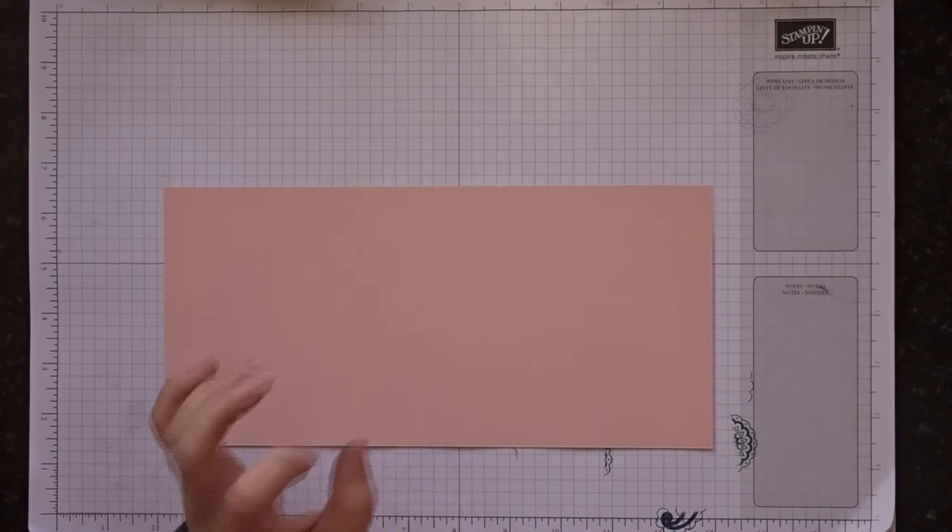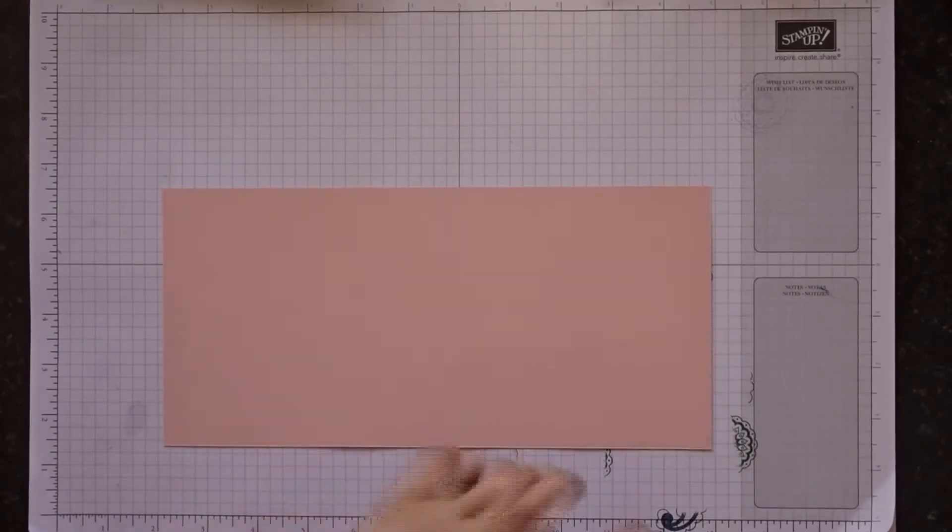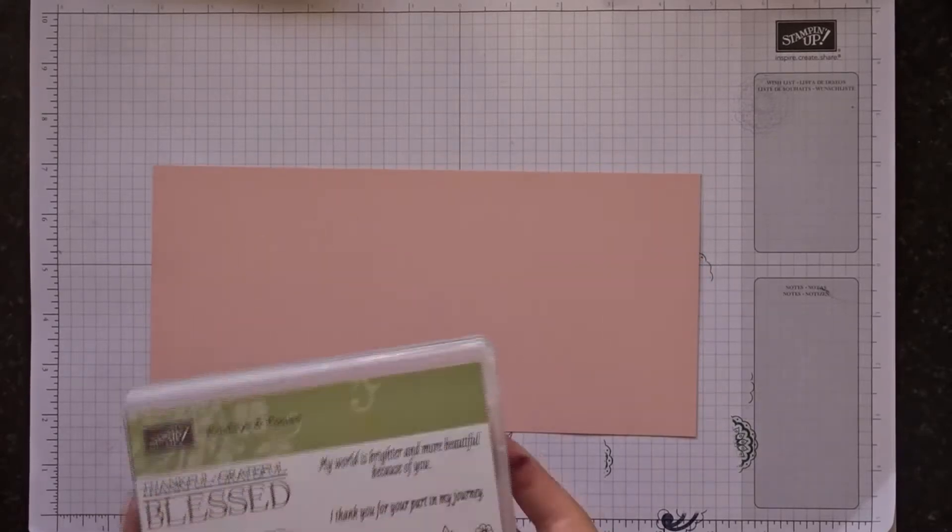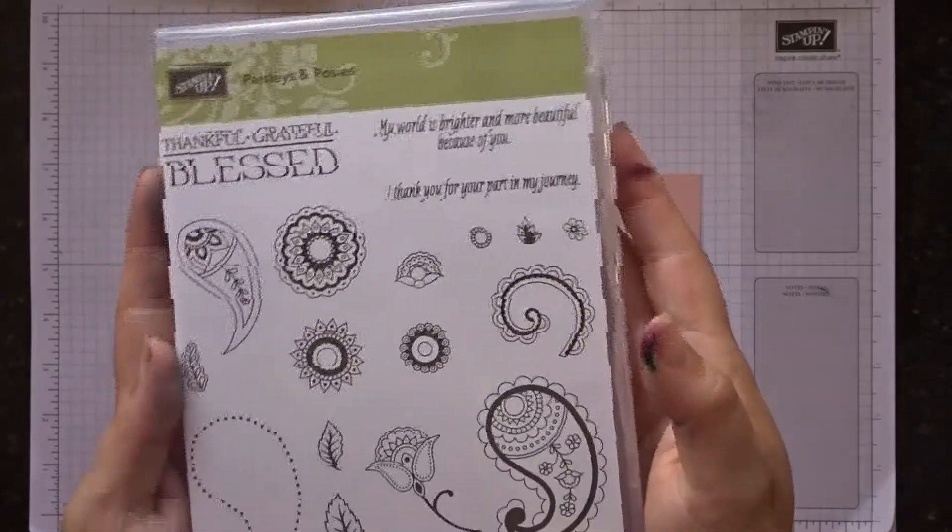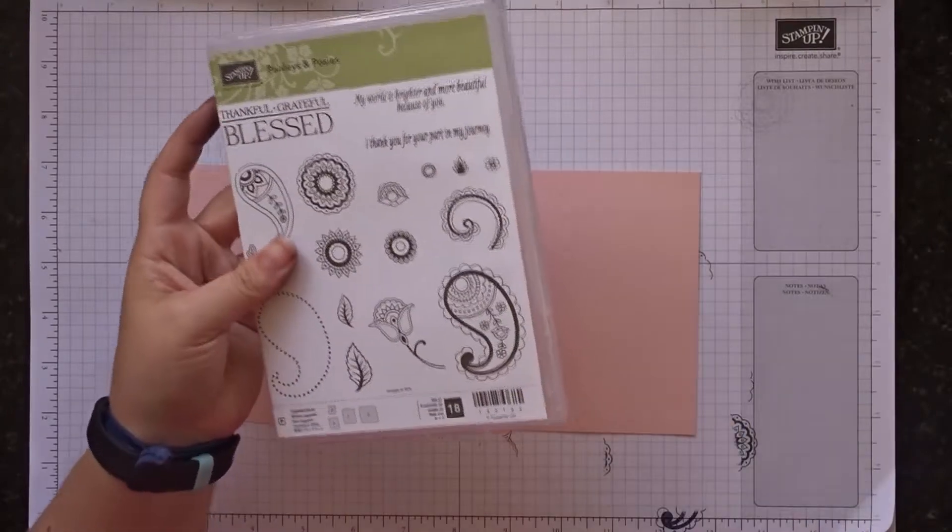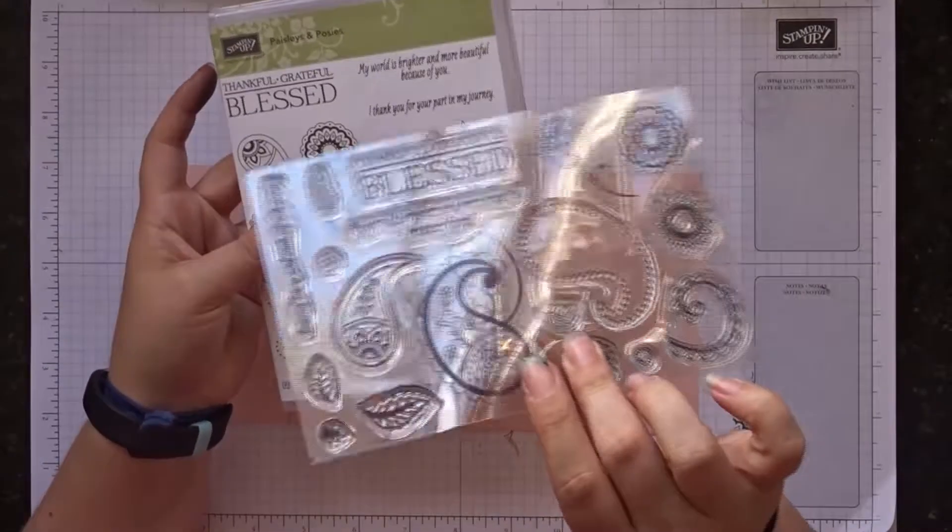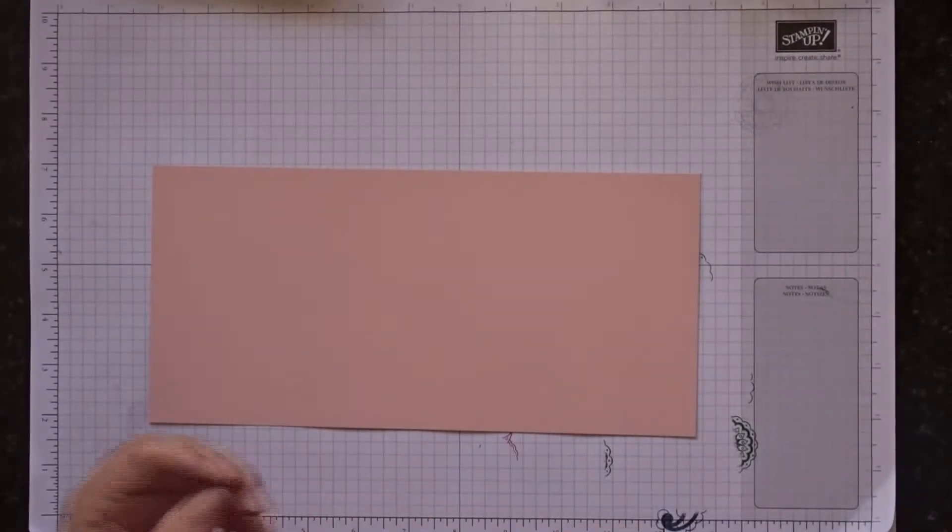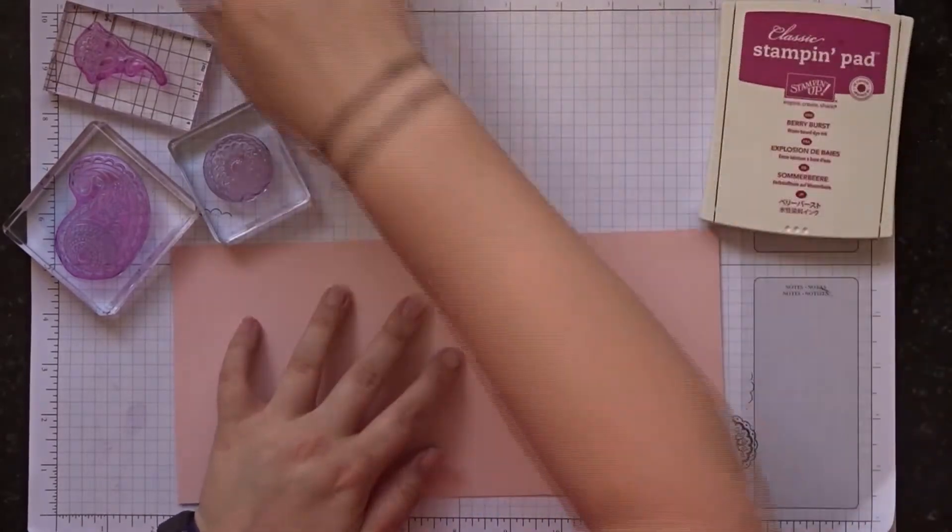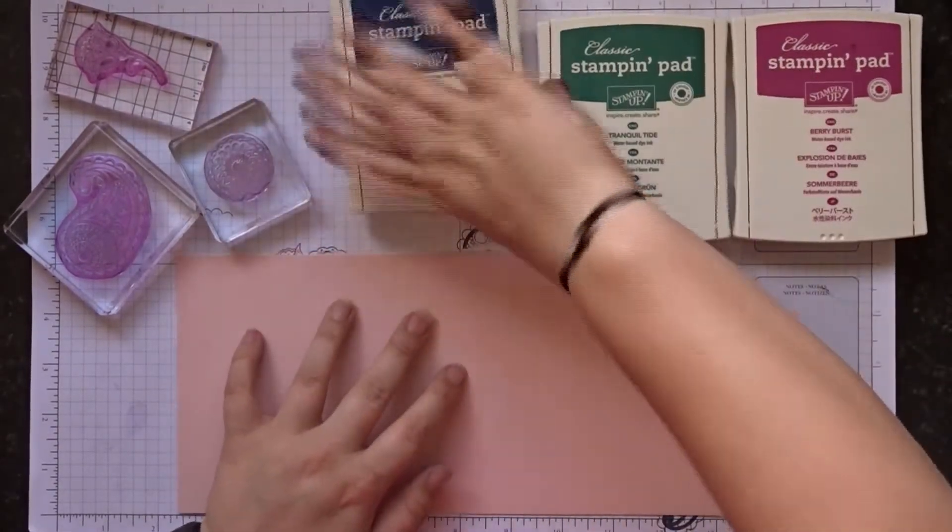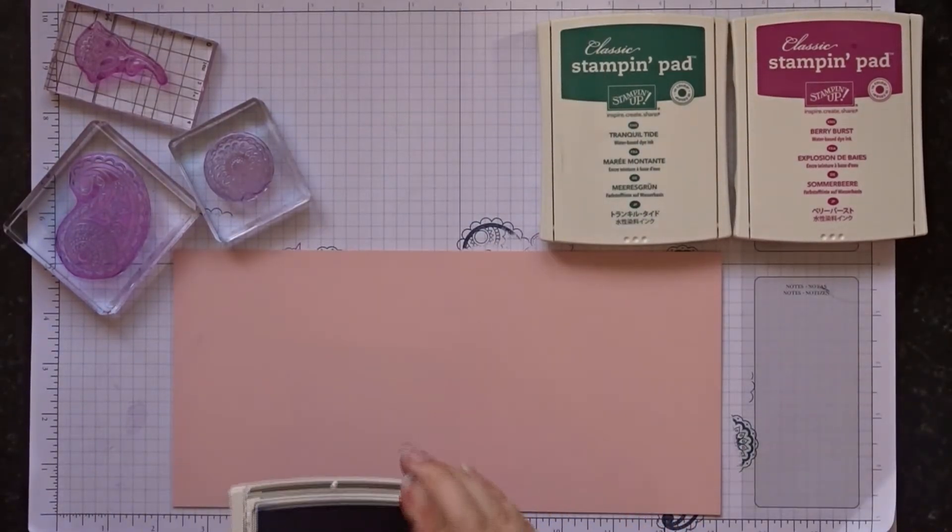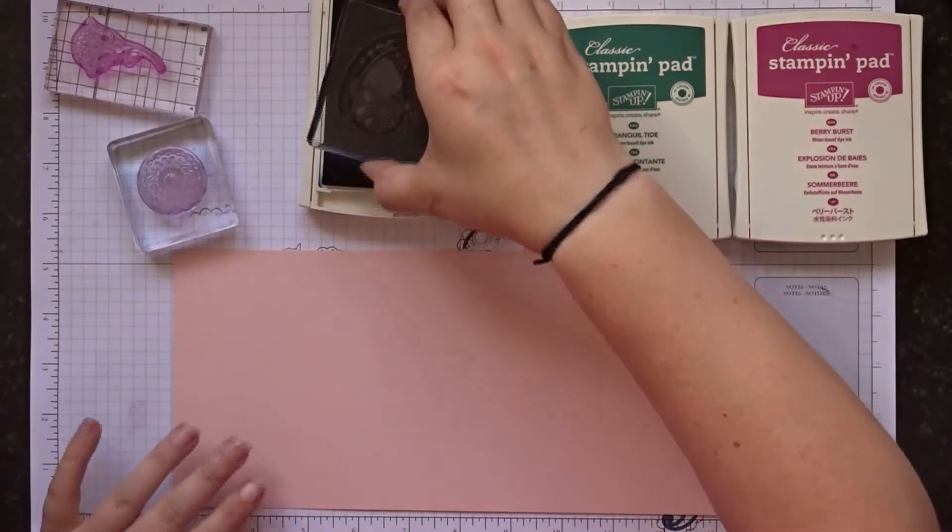So you're going to need a piece of cardstock that is ten and three quarter inches by five and one eighth inches. That's from my base, this is the Powder Pink which is one of the new ink colors. And then to create my background I'm going to be using the Paisleys and Posies stamp set, this is one of the photopolymer ones. I have got three stamps I'm going to be using and three inks: Berry Burst which is a new ink color, Tranquil Tide again a new ink color, and then the Night of Navy.